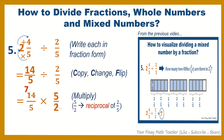14 and 2 can be reduced by 2, so 14 becomes 7 and 2 becomes 1. Also, 5 and 5 can be reduced by 5, giving 1 and 1. So our answer is 7 over 1, or simply 7.